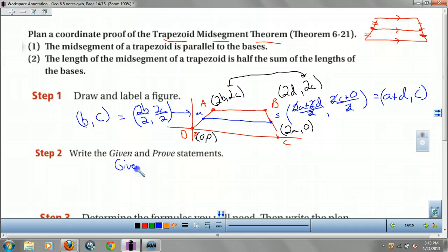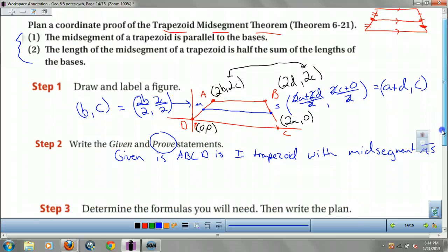Now your given is ABCD is isosceles trapezoid with mid segment ms. Your proof, your proof are these guys right here. Okay? So you have to prove 2 things.